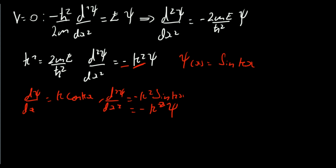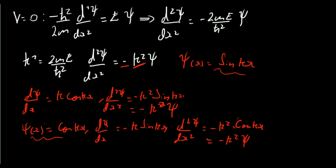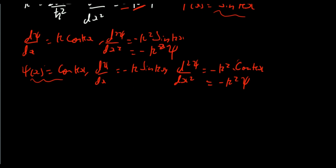This is a second order differential equation, so in general we need two solutions. Because sine was a solution, we also try cosine: psi of x equals cos of kx. Differentiating: d psi by dx equals minus k sine kx, and d2 psi by dx squared equals minus k squared cos kx, which is minus k squared times psi. So cosine also satisfies the differential equation. The general solution is a linear combination: psi of x equals A sine kx plus B cos kx.